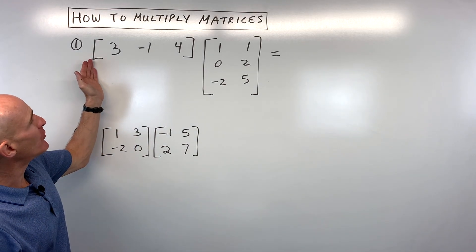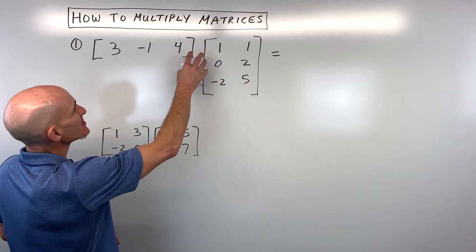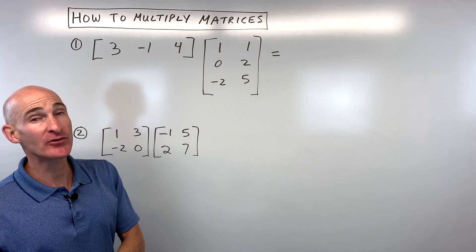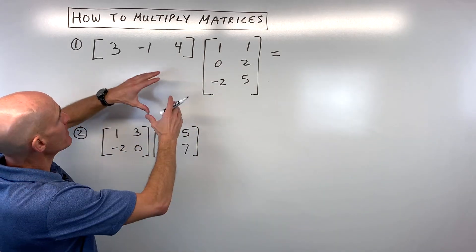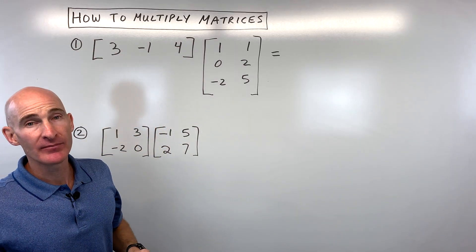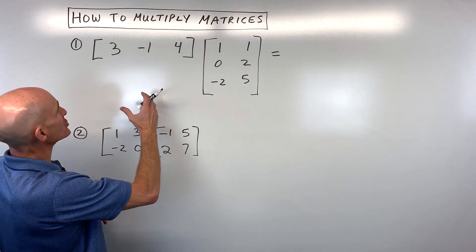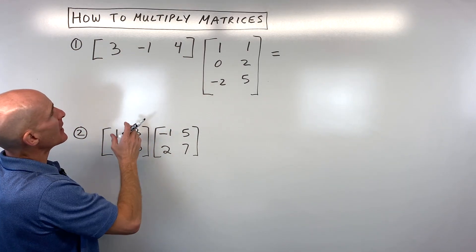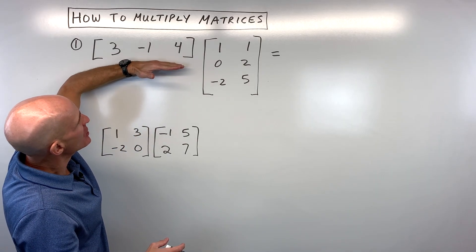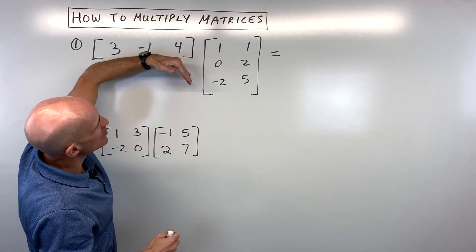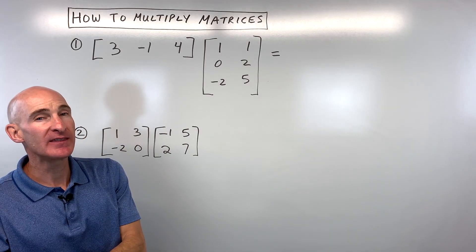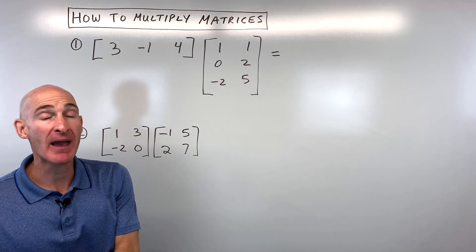The first example here, we've got this matrix times this matrix. You might be asking, what's a matrix? Well, it's just a way of organizing data — almost like a table or a chart. And what's interesting is that when you multiply matrices, you're multiplying these quantities together, and you have to make sure that the dimensions match up.